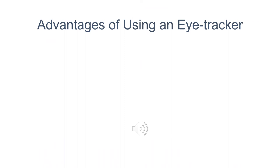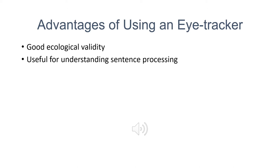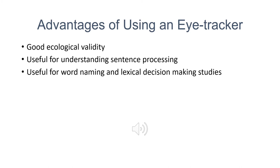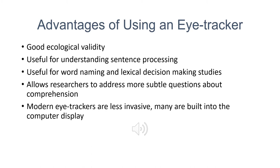There are several advantages to using an eye tracker. An eye tracker has good ecological validity — it measures a participant's normal eye fixations as they look at a stimulus. The participant is able to revisit previously viewed stimuli without interruption. It's useful for understanding sentence processing, word naming, and lexical decision making studies. It allows researchers to address subtle questions about comprehension, and modern eye trackers are less invasive and several are built into the stimuli display.